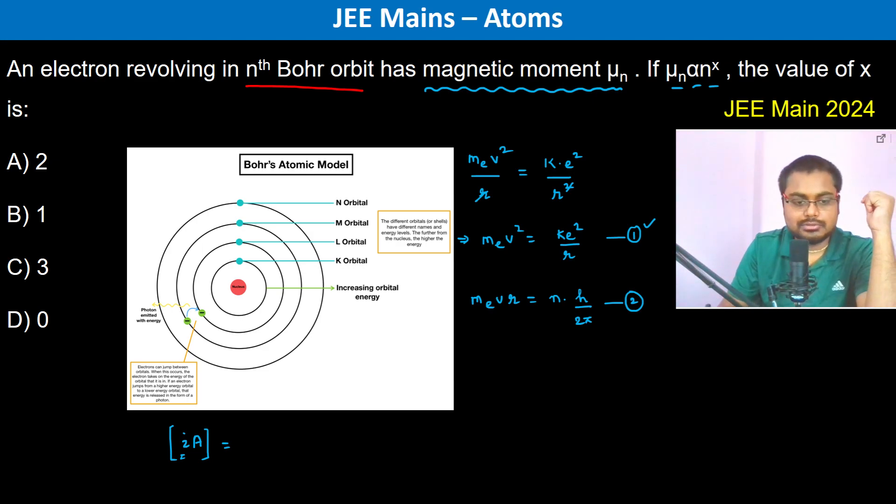So therefore the i is going to be e divided by 2πr divided by v. And this is multiplied by area which is πr squared. So this cancels, this cancels.